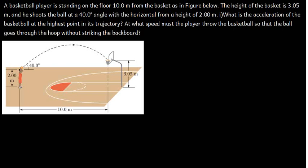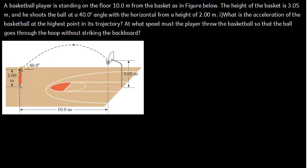In this video we're going to talk about projectile motion. A basketball player is standing on the floor 10 meters from the basket as shown in the figure. The height of the basket is 3.05 meters and he shoots the ball at 40 degrees with the horizontal from a height of 2.0 meters.